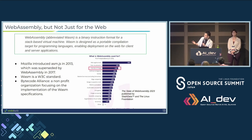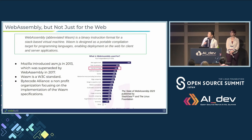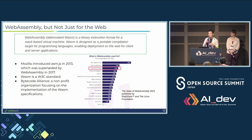In 2013 Mozilla introduced ASM.js — a highly optimizable subset of JavaScript that runs in a browser — as a precursor to WebAssembly. In 2017 they decided to create a new binary instruction set, which became WebAssembly. Now WASM is a standard in W3C. There's also the Bytecode Alliance, an organization focused on actual implementation of WASM specifications, and Midokura is a member of the Bytecode Alliance.